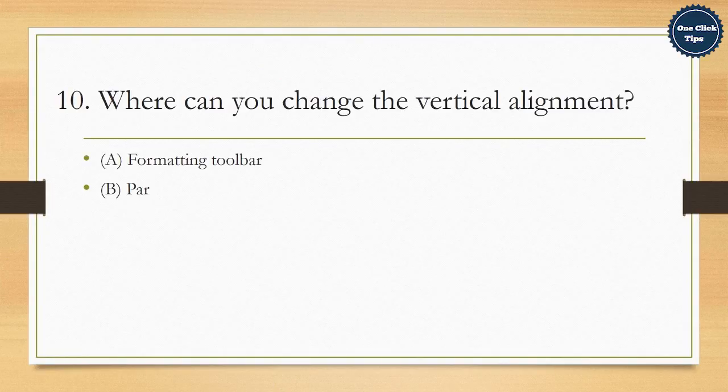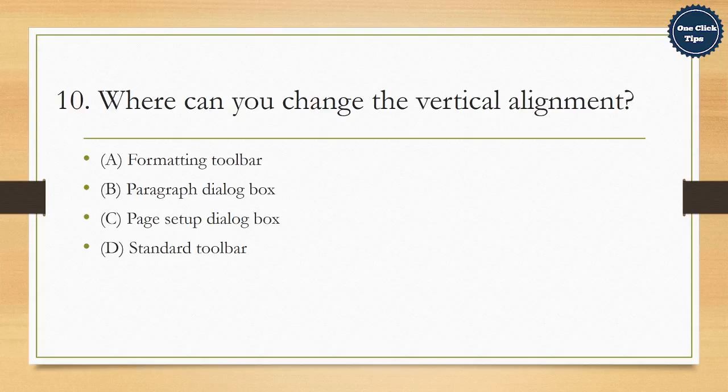10. Where can you change the vertical alignment? A. Formatting toolbar, B. Paragraph dialog box, C. Page setup dialog box, D. Standard toolbar. The correct answer is C. Page setup dialog box.